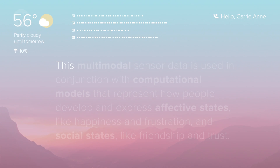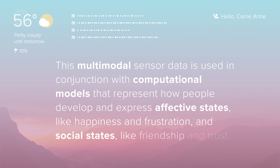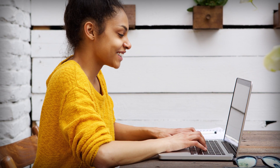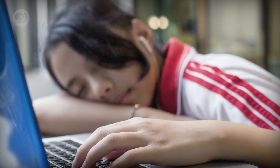Affect-aware systems use sensors, sometimes worn, that capture things like speech and video of the face, as well as biometrics like sweatiness and heart rate. This multimodal sensor data is used in conjunction with computational models that represent how people develop and express affective states, like happiness and frustration, and social states like friendship and trust. These models estimate the likelihood of a user being in a particular state, and figure out how to best respond to that state in order to achieve the goals of the system – this might be to calm the user down, build trust, or help them get their homework done.